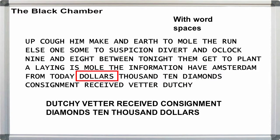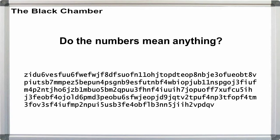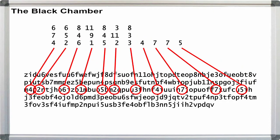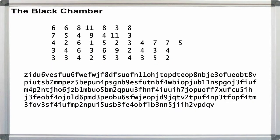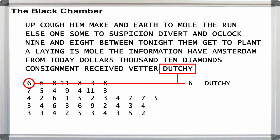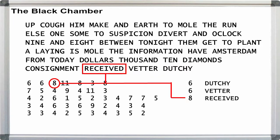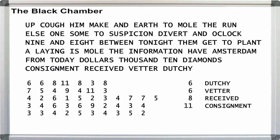This leaves one more question we can ask: is it possible the numbers had some kind of purpose? First, extract the numbers from the original message. Next, try taking the first four words from the bottom right and matching them to the first four numbers from the list. Dutchie is 6 letters long, Vedder is 6 letters, Received is 8, and Consignment is 11. Yes, they match up with the letter counts in each word.